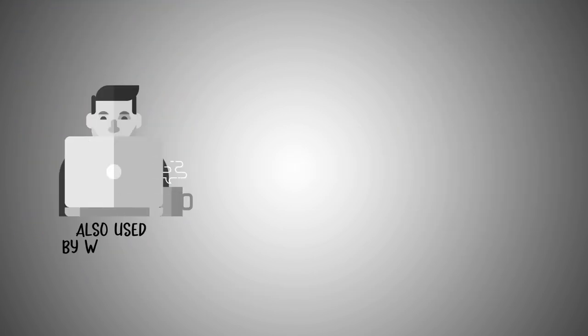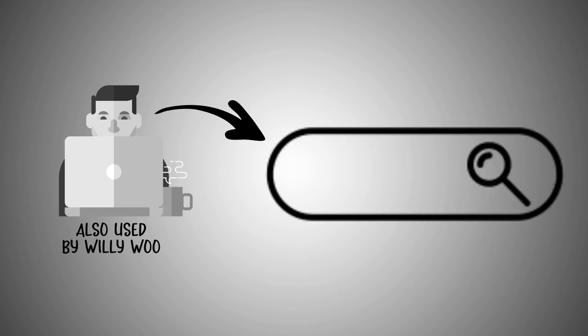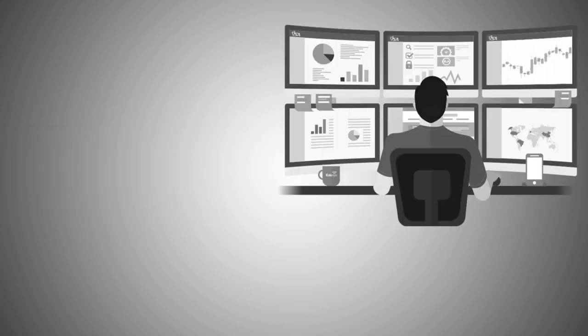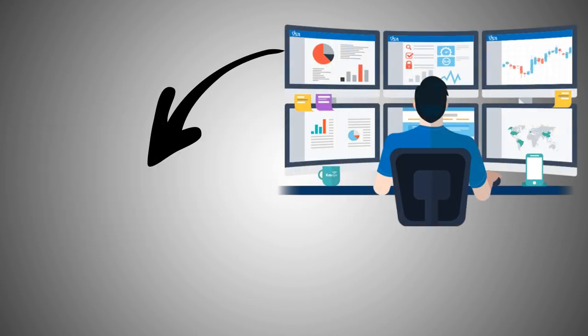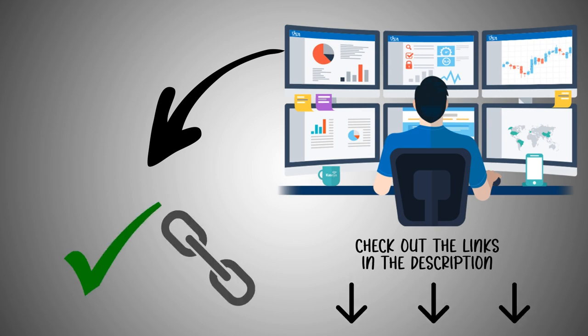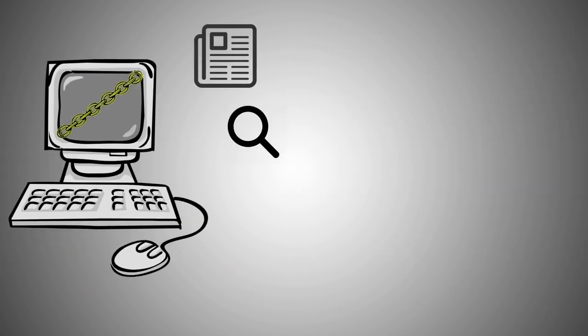One of the best resources, also used by Willy Woo, is glassnode.com. If you're interested in learning more about some other resources, check out the links in the description. From the on-chain analysis found on these different resources, we are looking at four important data points.